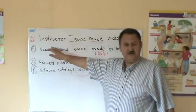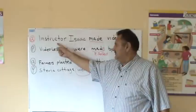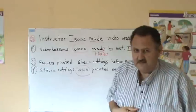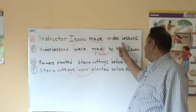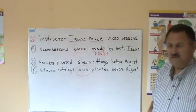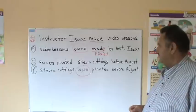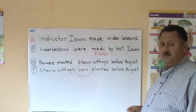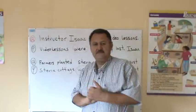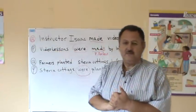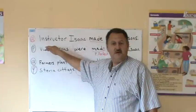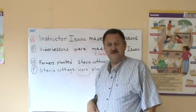Look at the sentence. Instructor Isaac — that's me by the way — made video lessons. Instructor Isaac made video lessons. Now, this sentence is an active sentence, right? Because the focus is on who? Instructor Isaac.